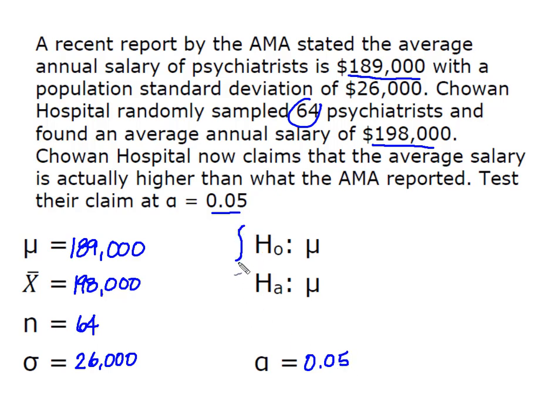Let's set up our null and alternative hypothesis. The established value of the population parameter is $189,000. Now we need to figure out what direction we're going to be testing. The hospital claims that the salary is actually higher so that becomes a greater than.